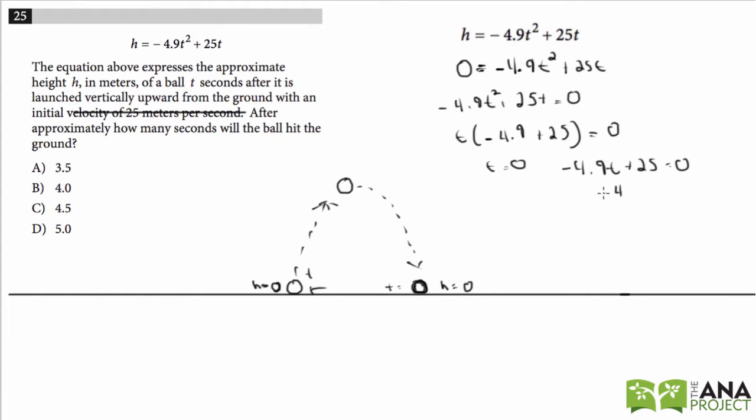Negative 4.9t equals... we're going to subtract 25 from both sides, so we'll move the 25 here, and then we're going to divide by negative 4.9 on both sides.